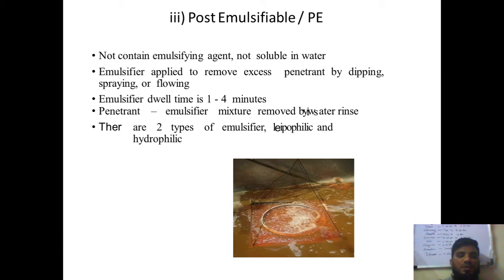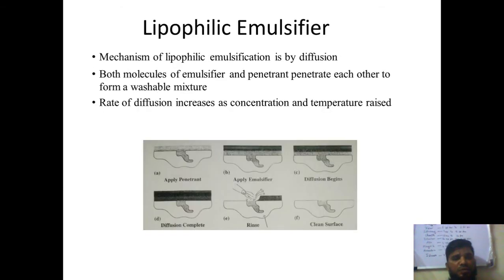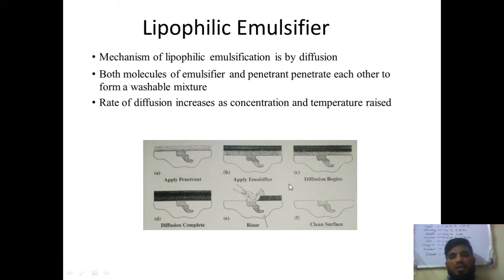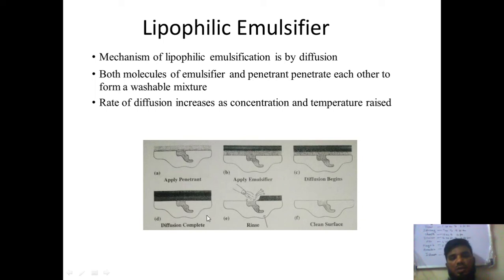There are two types of emulsifiers: lipophilic and hydrophilic. Lipophilic emulsification works by diffusion — it goes inside and removes the penetrant by diffusion. For example, you apply the penetrant, then apply the emulsifier; diffusion begins, with layers mixing inward and outward until the surface is fully mixed. The excess penetrant completely mixes with the emulsifier, and when a rinsing agent is applied, it is easily removed.